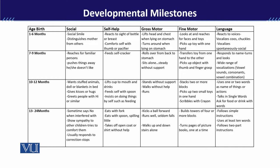اسی طرح جب ہم gross motor کی بات کرتے ہیں تو سب سے پہلے ہمیں یہ understand کرنا ضروری ہے کہ gross motor ہے کیا چیز۔ Gross motor is basically the ability in which the child is able to use all the basic muscles — یعنی وہ اٹھ سکتا ہے، بیٹھ سکتا ہے، بھاگ سکتا ہے۔ 1 سے 6 مہینے کے درمیان اس کی ability ہے کہ وہ chest lift کر سکتا ہے lying on stomach، اور turns around کر سکتا ہے when lying on stomach. اگر وہ یہ سارا کچھ کر رہا ہے تو اس کا مطلب ہے کہ اس کے developmental milestones appropriate ہیں، لیکن اگر نہیں کر پا رہا تو اس کا مطلب ہے کہ developmental milestone delayed ہے۔